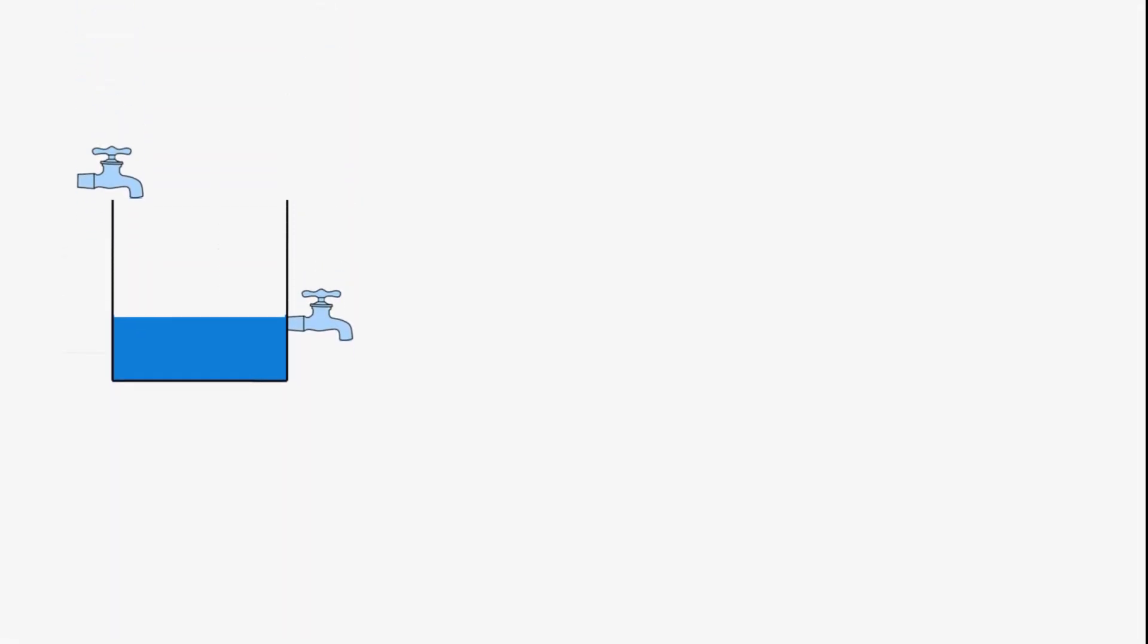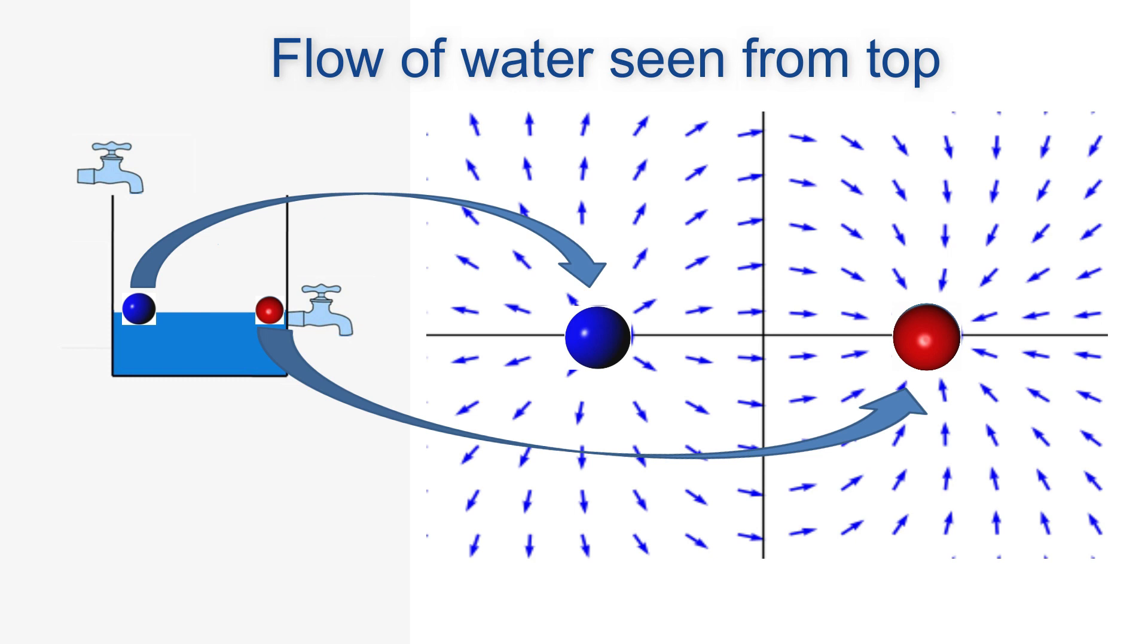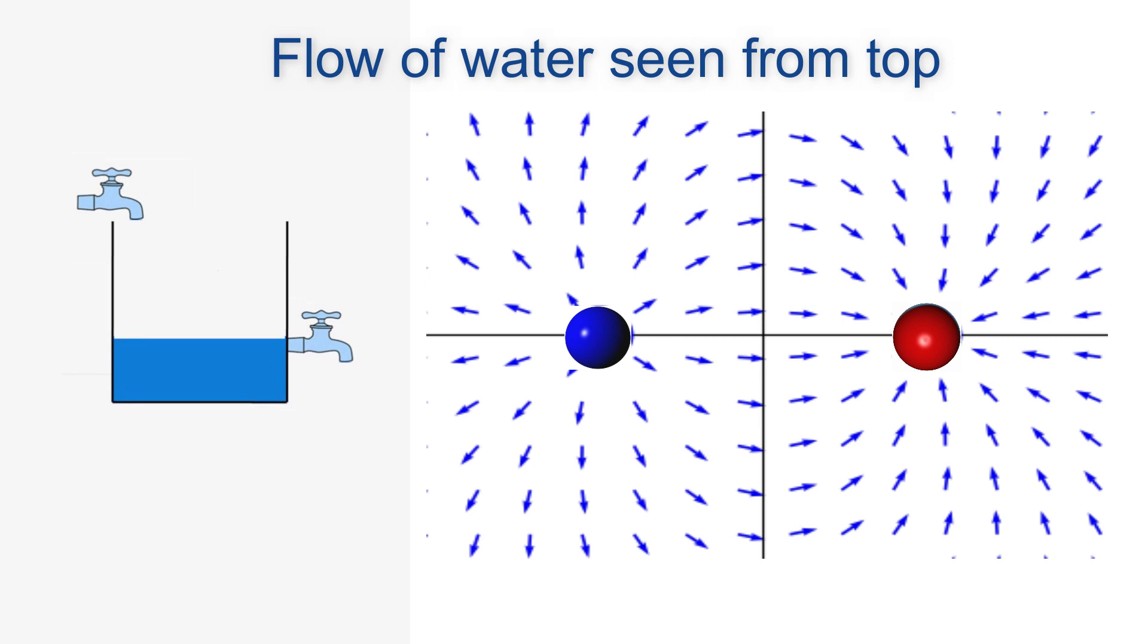In context of our example taken to describe flux, the vector field can be described as the path followed by the water from one end to the other end, that is from inlet to outlet. Water moves in different directions and with different speeds from inlet to outlet. Let this arrow represent the motion of water. So this arrow represents the vector field.